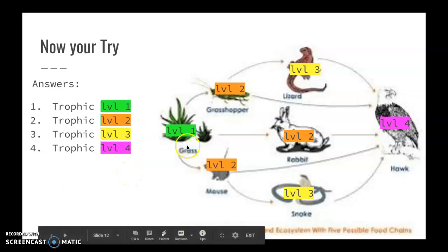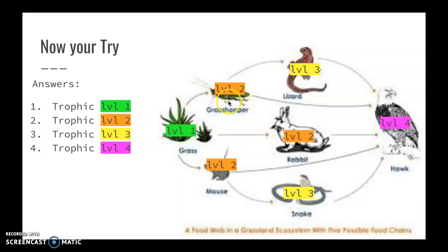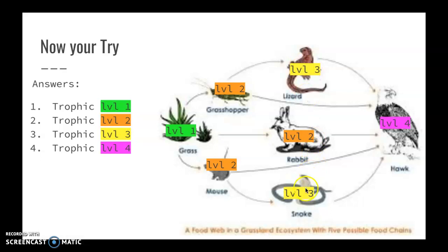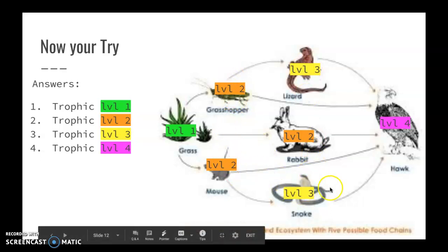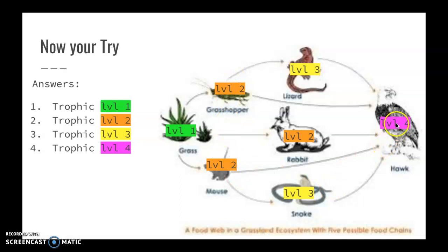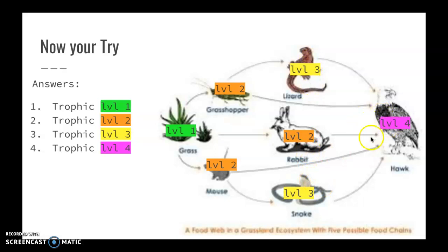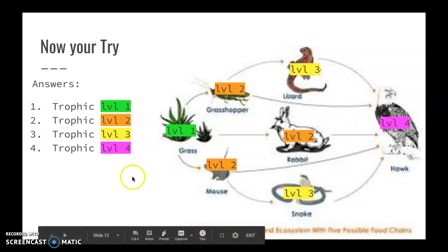Here are your answers. Grasses are level 1 — they are our producers. The grasshopper, the mouse, and the rabbit are all trophic level 2 because they are the only organisms in this food web that get energy by consuming the producer. The snake and the lizard are each level 3 because they hunt and eat organisms from trophic level 2. The hawk is actually trophic level 4 — while it eats grasshoppers, mice, and rabbits, it also hunts and eats lizards and snakes. Since lizards and snakes are trophic level 3, this automatically makes the hawk a level 4.